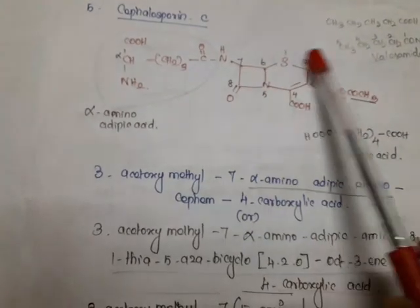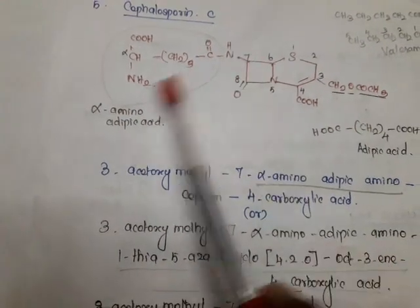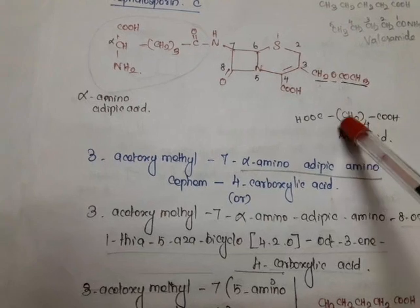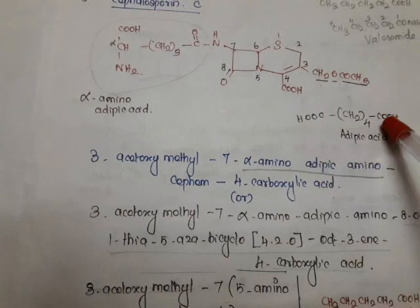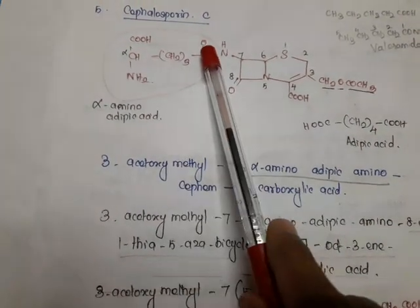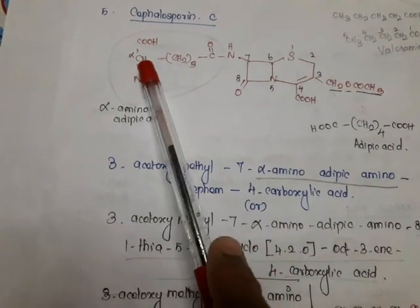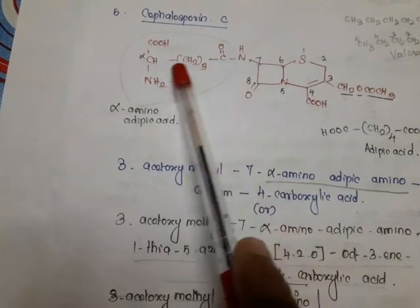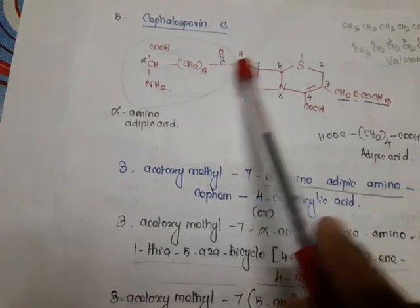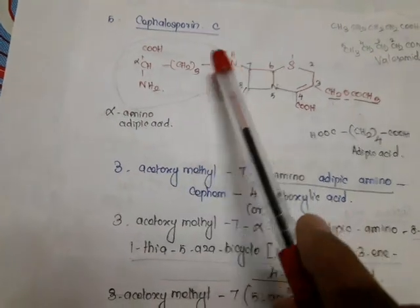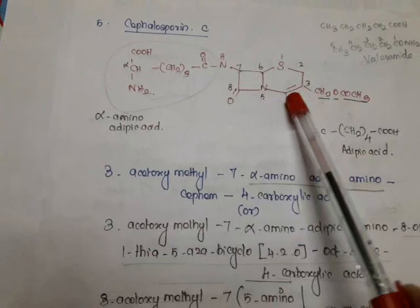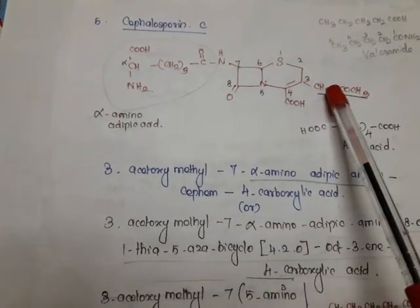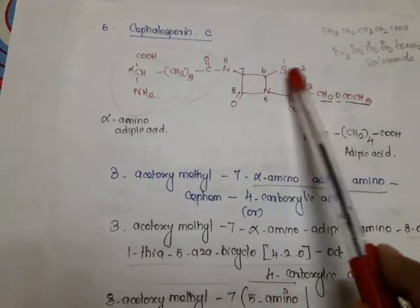Now we'll see the structure of cephalosporin C. We have known this is called cephalosporanic acid, and in the seventh position a group is added. This is called adipic acid: CH2 four times with two COOH groups connected. With NH2 connected to the alpha carbon of adipic acid, it is called alpha-aminoadipic acid. This acid combines with the NH2 of the seventh position to form an amide — that's why the group at the seventh position is called alpha-aminoadipicoamino. The chemical name is: 3-acetoxymethyl-7-(alpha-aminoadipicoamino)cephem-4-carboxylic acid.